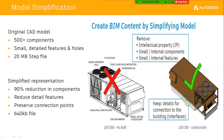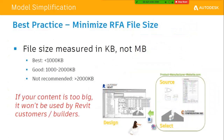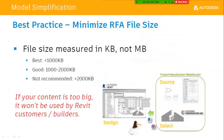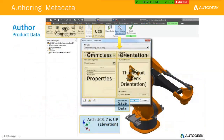As design engineers, we need to convert these models to construction-ready models. The best practice is to convert the .iam (Inventor assembly) file to a .rfa file. If our content is too large, we can't use it inside Revit — it's very difficult to work with a very large file size. So first we reduce the size through model simplification.